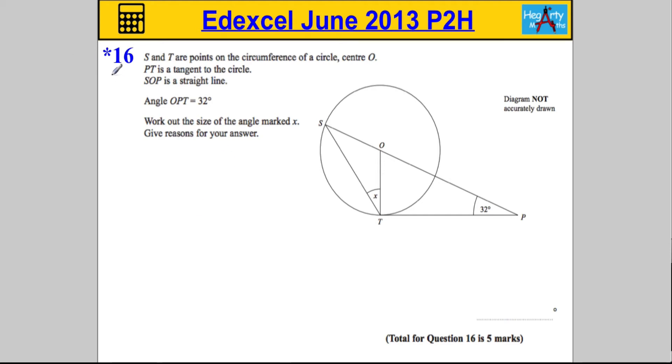Okay, so question 16 is another one of these starred questions, so make sure that your written communication is absolutely spot-on to get full marks here. S and T are points on the circumference of a circle with center O.